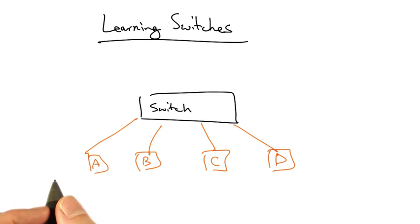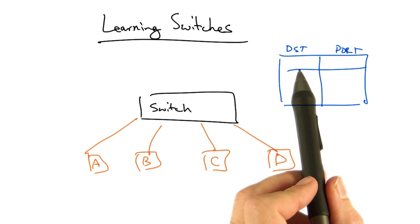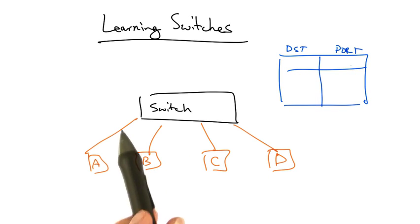Let's take a quick look at how learning switches work. A learning switch maintains a table between destination addresses and output ports on the switch, so that when it receives a frame destined for a particular place, it knows what output port to forward the frame.